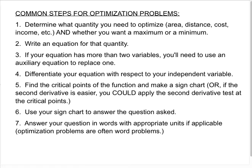All right. Common steps for all optimization problems. Number one, determine what quantity you need to optimize. Is it area, distance, cost, income, and whether you want the max or min. So if you're talking about optimizing cost, you probably want minimum cost. Second, write an equation for whatever quantity you determined you need.